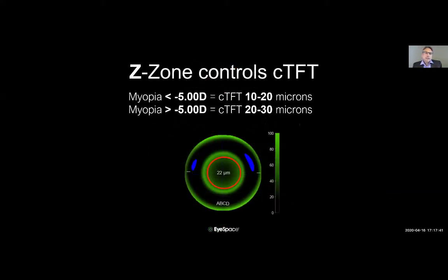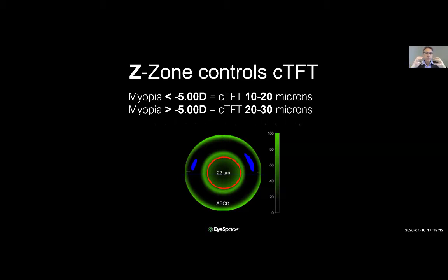As a rule of thumb, for myopia cases below minus 5 diopters, central tear film thickness should be somewhere between 10 and 20 microns. For higher minus cases, move it towards 20–30 microns. The reasoning is that as we mold the tissue, the overall sag of the lens on the cornea drops over time, so we need reserved space in the center to prevent the BOZR from touching the cornea and causing central staining.